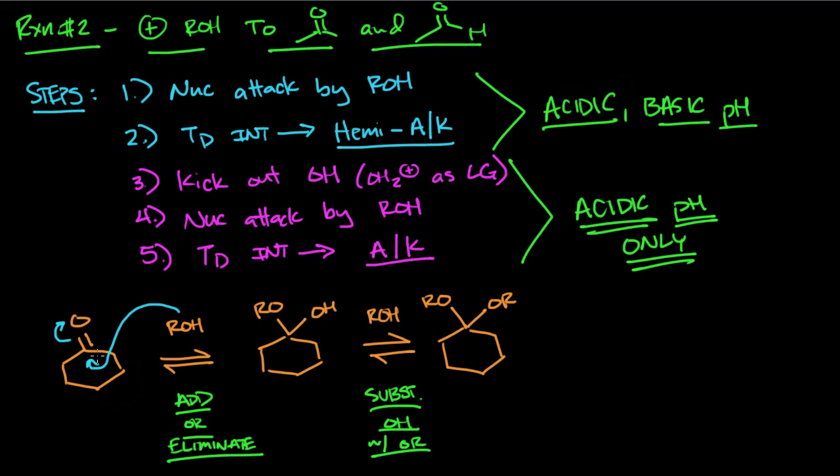In this case we're dealing with a ketone - it can also happen with an aldehyde - and that makes your tetrahedral intermediate, then you get your hemiacetal or hemiketal. Here we have a hemiketal because we started with a ketone, and this can be catalyzed under acidic and basic pH.